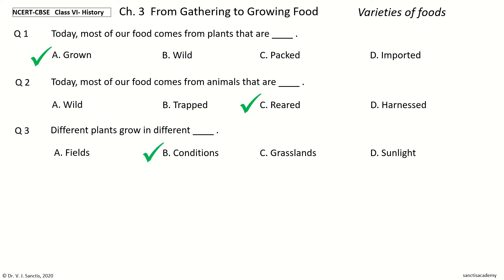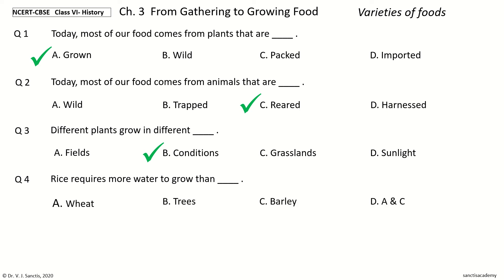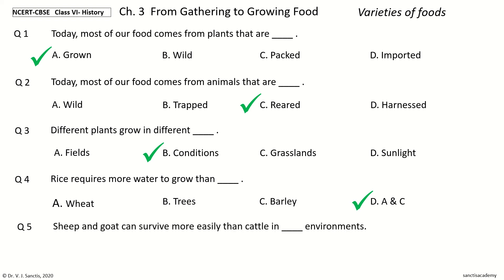And the answer is conditions. Question 4: Rice requires more water to grow than dash. The options are: wheat, trees, barley, A and C. And the answer is A and C.